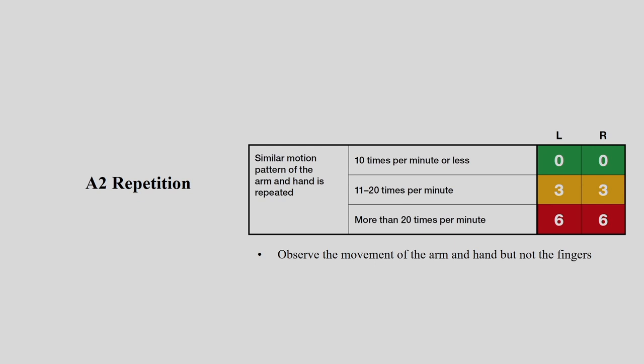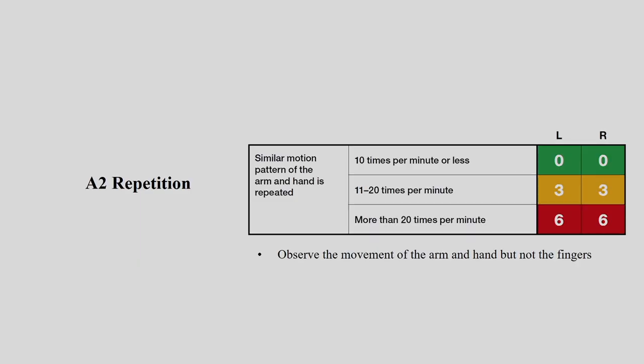Under Stage A, you also assess repetition. Here, 10 times per minute or less scores 0 (green) for both left and right arms; 11 to 20 times per minute scores 3 (amber); and more than 20 times per minute scores 6 (red). This refers to a similar motion pattern of the arm and hand which repeats over and over again.